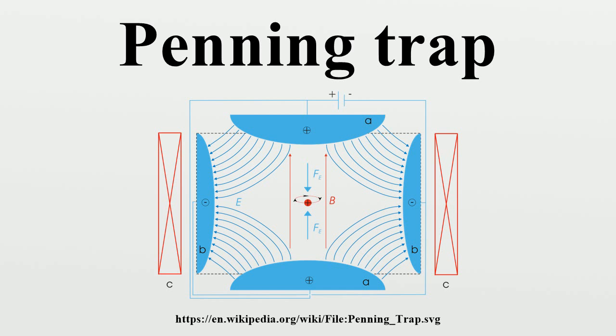The electric field causes ions to oscillate along the trap axis. The magnetic field in combination with the electric field causes charged particles to move in the radial plane with a motion which traces out an epitrochoid. The orbital motion of ions in the radial plane is composed of two modes at frequencies which are called the magnetron and the modified cyclotron frequencies. These motions are similar to the deferent and epicycle, respectively, of the Ptolemaic model of the solar system.